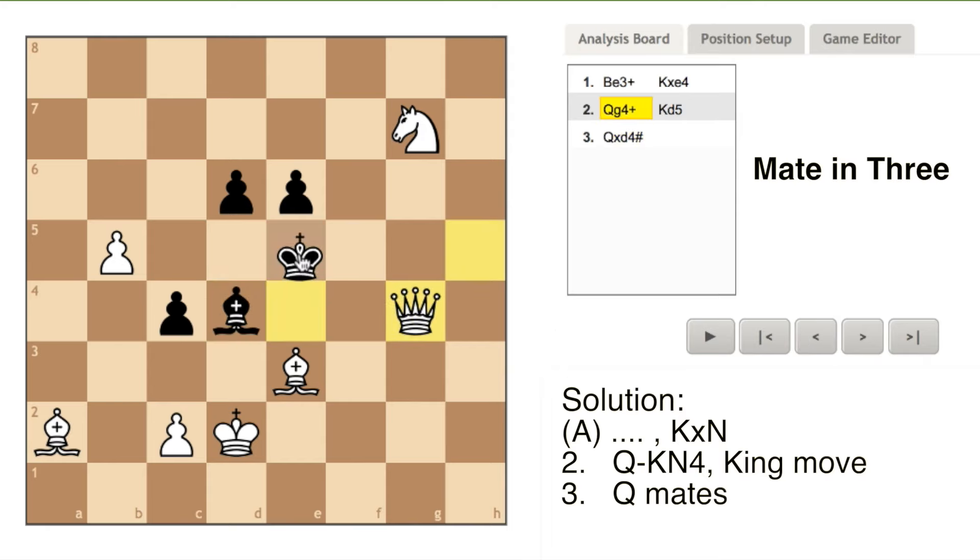If black moves to king four, white can checkmate by moving its queen to king six.